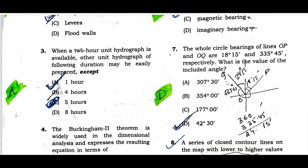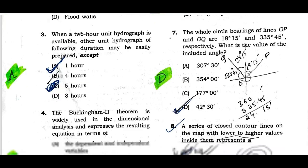Question number seven: The whole circle bearing of lines OP and OQ are 18 degrees 15 minutes and 135 degrees 45 minutes respectively. What is the value of the included angle? The included angle value is 42 degrees 30 minutes. Option D is the correct one.